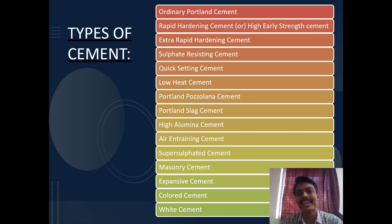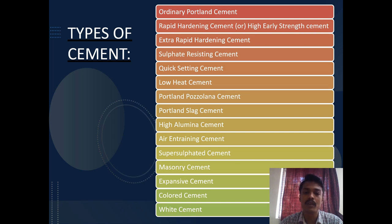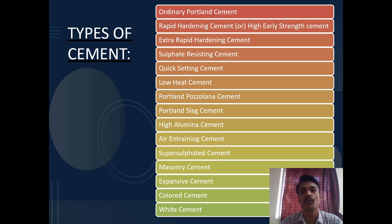These are the different types of cement available in the market. We regularly use OPC, and in recent times rapid hardening cement is also getting more popular. Air-entraining cement is mostly used in pervious concrete or lightweight aggregate concrete. White cement plays a greater role especially in architectural applications — wherever you want to hide joints or create architectural features, white cement or colored cement helps.